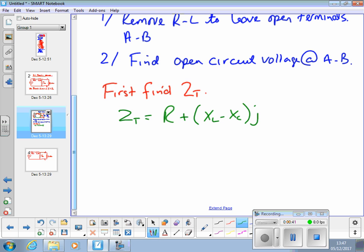So putting the values in, six plus eight minus three J equals six plus five J ohms. Converted to rectangular gives you an impedance of 7.81 ohms angle 39.8 degrees.